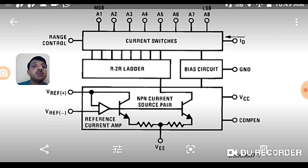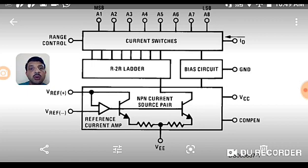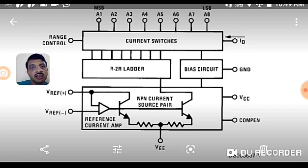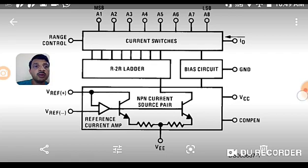The DAC 0808 is a current output device — it does not provide voltage output directly. So we need to connect a separate current-to-voltage converter using an op-amp circuit, or by placing a resistor on the load side to get the equivalent voltage corresponding to the current. Basically, this R2R ladder gives you different current values for different steps of the digital inputs — that is the fundamental concept of this DAC.